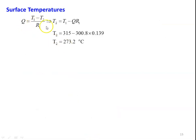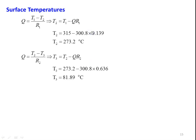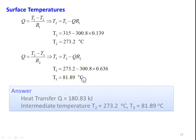The interface temperature T2: from Q = (T1 - T2)/R1, T2 = T1 - Q·R1 = 315 - 300.8 × 0.139 = 273.2°C. The outer surface temperature T3: from Q = (T2 - T3)/R2, T3 = T2 - Q·R2 = 273.2 - 300.8 × 0.636 = 81.89°C. Summary of answers: heat transfer = 180.83 kJ, T2 = 273.2°C, T3 = 81.89°C.